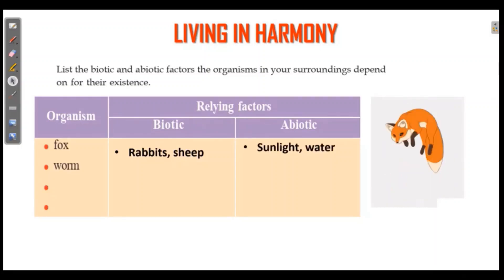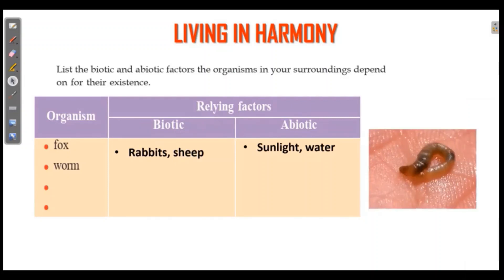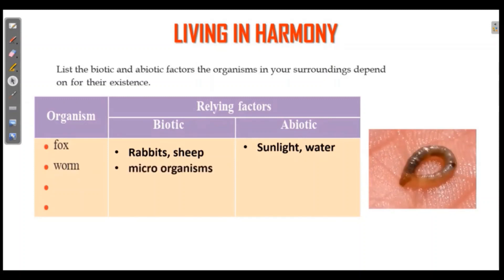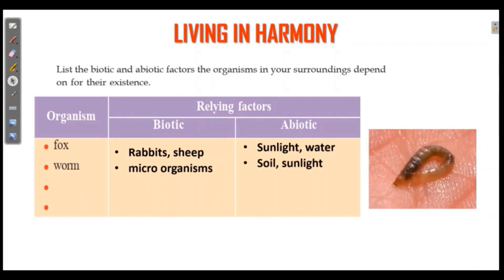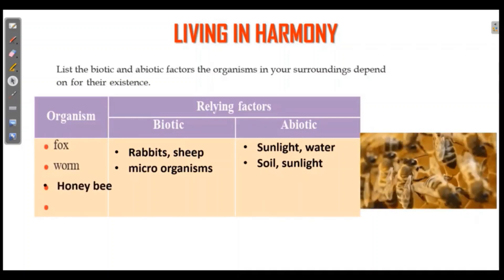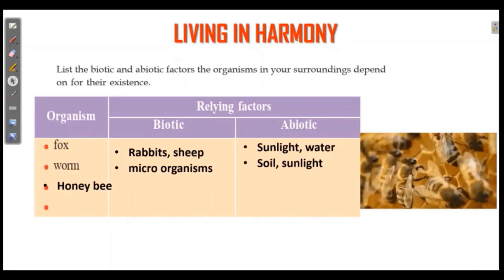Now let's see what the worm is. The worm is a microorganism. The worm is not a human — it is a microorganism. Then soil and sunlight are abiotic factors associated with the worm.